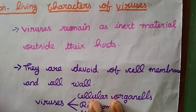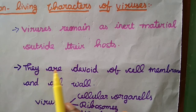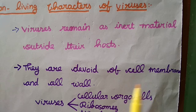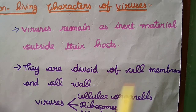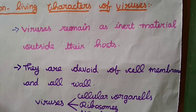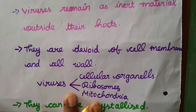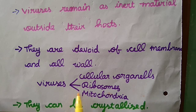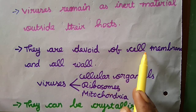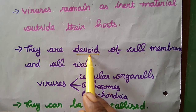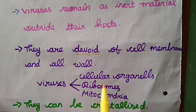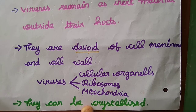Second non-living characteristic: they are devoid of cell membrane and cell wall, which means they do not have proper cell organelles. Viruses lack organelles such as ribosomes and mitochondria.